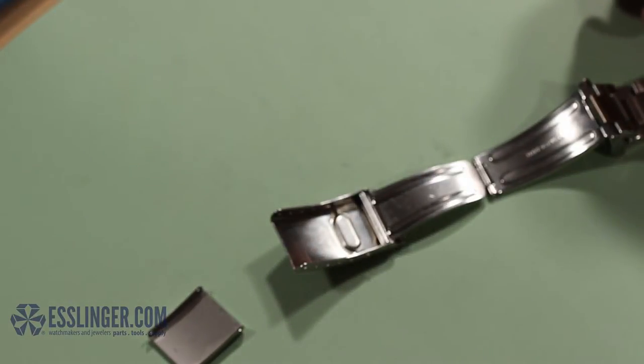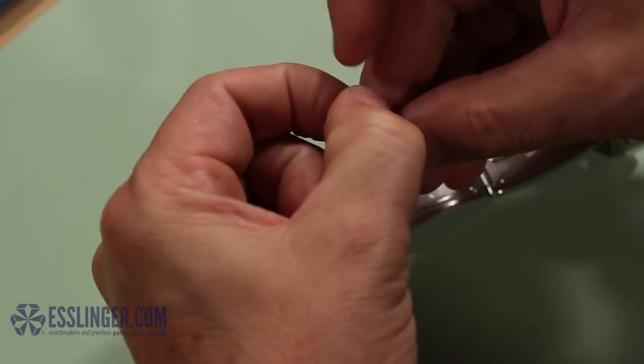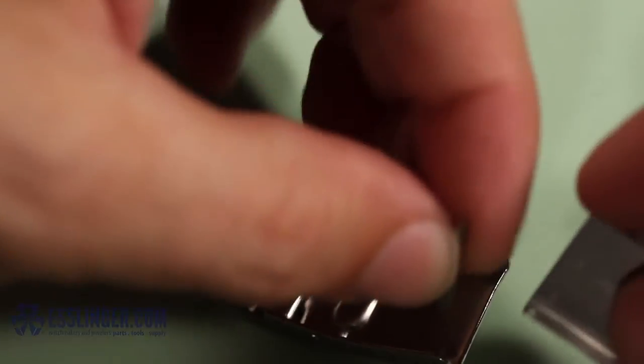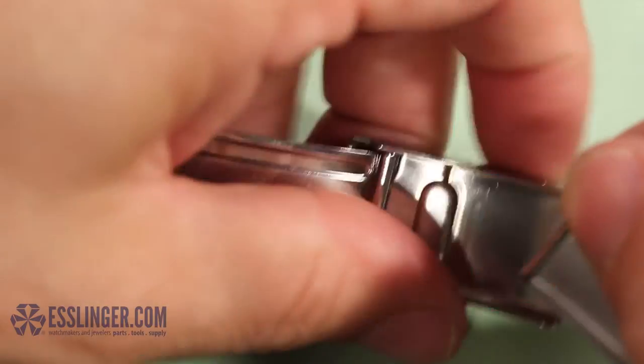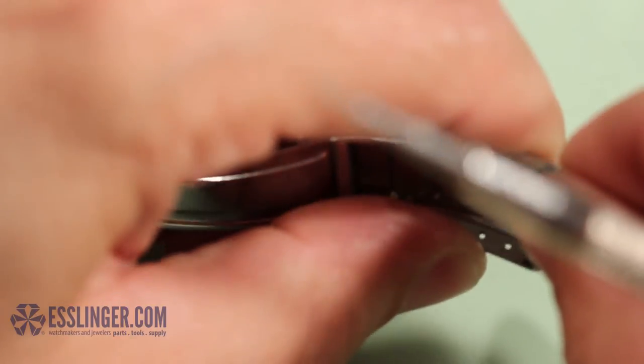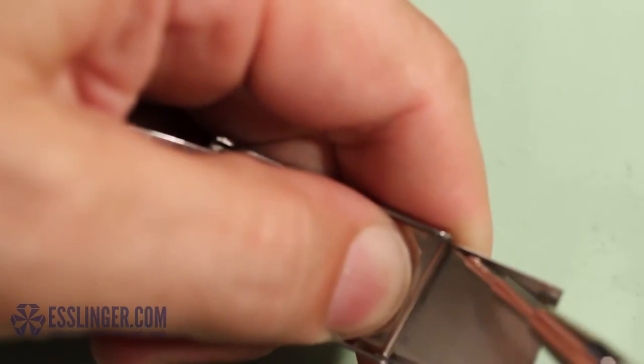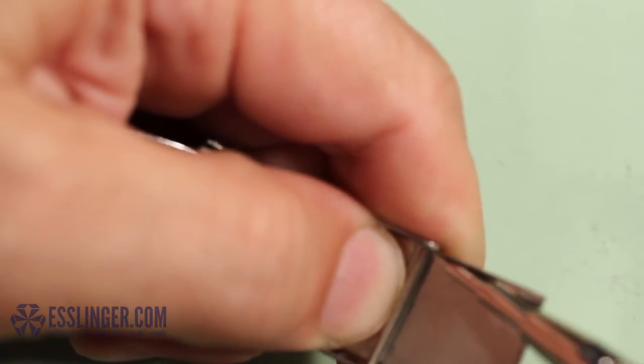Hold the clasp and extender steady. Grab a spring bar from your parts tray and insert one end into the hole in the bottom of the extender. Use the forked end of your spring bar tool to press the spring bar down and into the extender and clasp. Wiggle the spring bar around until it clicks into place.